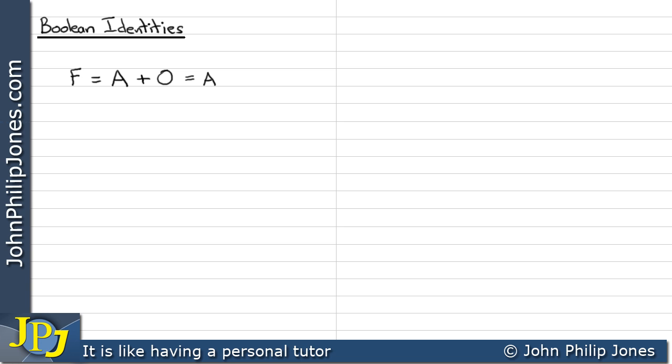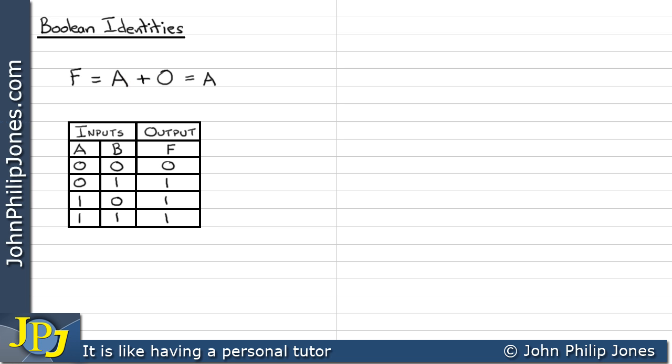Now to ensure we're convinced of this, let's have a look at the truth table associated with this particular minimization. The truth table is that of an OR gate because we can see that A has been ORed with 0. Here's the truth table for a two-input OR gate.